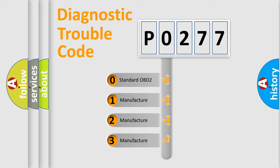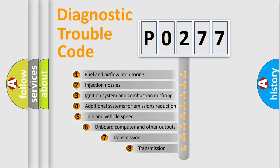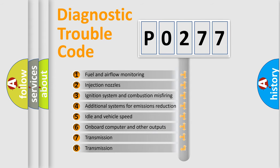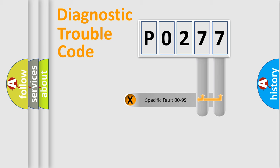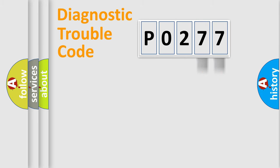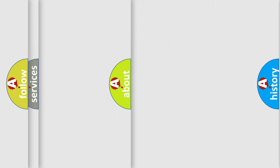If the second character is expressed as 0, it is a standardized error. In the case of numbers 1, 2, or 3, it is a manufacturer-specific error. The third character specifies a subset of errors. This division is valid only for the standardized DTC code, where the second character is expressed by the number 0. Only the last two characters define the specific fault within the group.